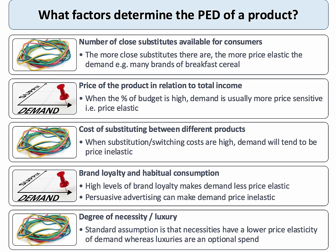What are the key factors that help determine the value for price elasticity of a product? Perhaps the most important is the number of close substitutes. The more close substitutes there are in the market, the more elastic is demand, because consumers find it easy to switch.